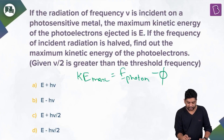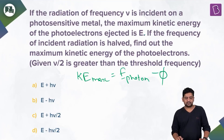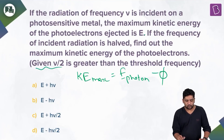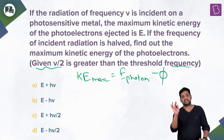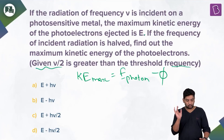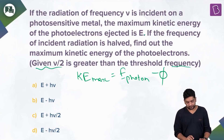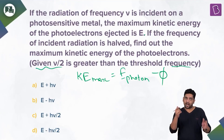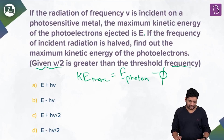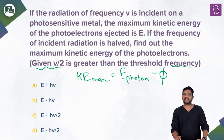Reading forward: if the frequency of incident radiation is halved, find the maximum kinetic energy of photoelectrons, given that ν/2 is greater than threshold frequency. If ν/2 were less than threshold frequency, we could directly say K_max = 0 — no photoelectric effect. But here, even at half the frequency, we are still above threshold, so photoelectric effect will occur.